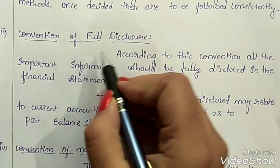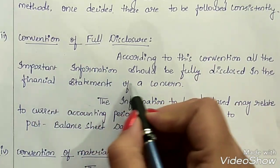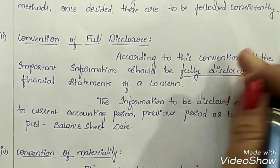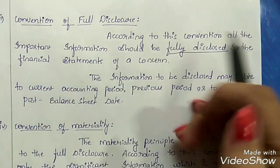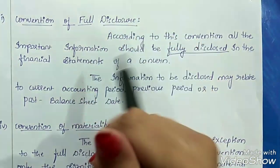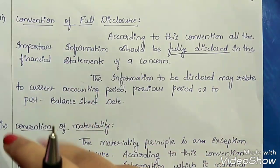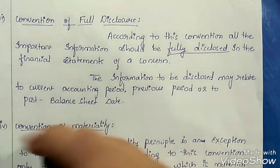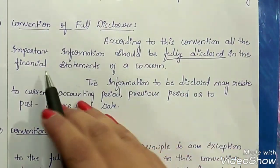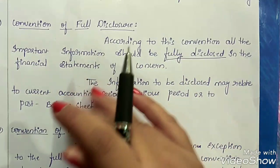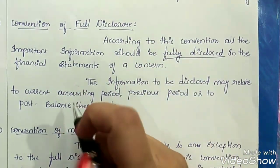The next convention is the convention of full disclosure. According to this convention, all the important information should be fully disclosed in the financial statements of a concern. There are many users of financial statements, such as shareholders, investors, creditors, customers, and even the government. They use the financial statements to know the financial position of the business. Hence, this convention says it is very important to disclose complete information relating to the business in the financial statements.